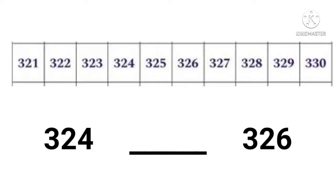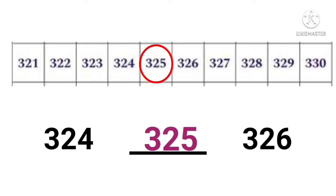Now, tell me what number comes in between three hundred and twenty-four and three hundred and twenty-six. You can take the help of the number line above. Yes, it is three hundred and twenty-five.